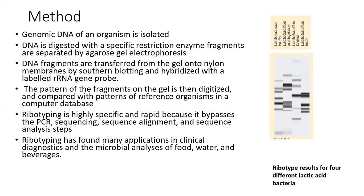Coming to the methodology of ribotyping, first we need to isolate the genomic DNA of the organism. Then the DNA is digested with a specific restriction enzyme, and the fragments that are generated are separated by agarose gel electrophoresis. The fragments are then blotted onto a nylon or a nitrocellulose membrane and are probed using an rRNA gene probe.